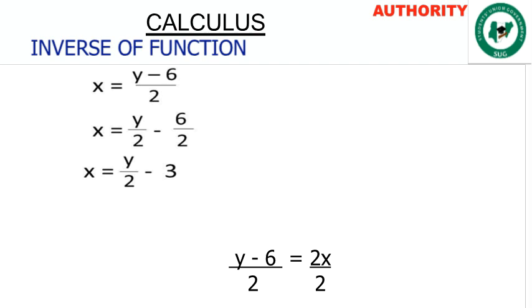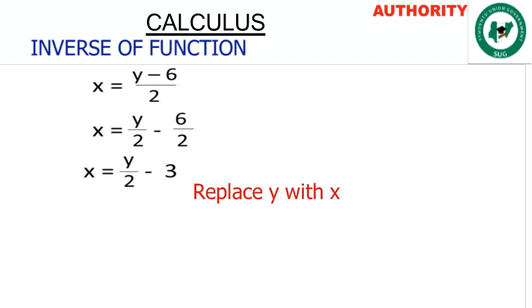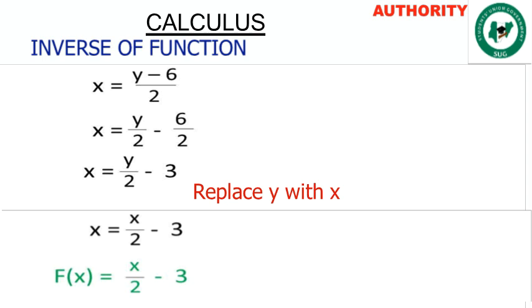Now let's separate the fraction: x = y/2 − 6/2. Since 6/2 = 3, we have x = y/2 − 3. Now replace y with x and replace x on the left with the inverse notation. After replacing, we get f(x) = x/2 − 3, which is exactly the original function that was given to us. This confirms our answer is correct.